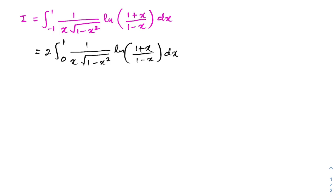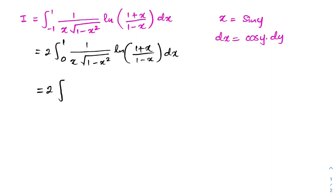Then as a next step, I am going to take the substitution x equals sin(y). Now we should differentiate, so we have dx equals cosine(y) dy. We should change the boundary limits: when x approaches 0, y approaches 0; when x approaches 1, y approaches pi over 2.